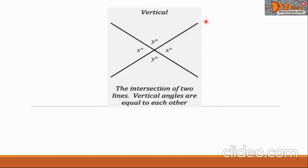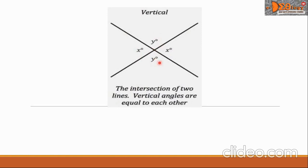Another group is vertical angles. We can see vertical angles in the intersection of two lines. In the figure, angle X is on one side and also on the other side — these two angles X and X are vertical angles. The same is true with angle Y and the other angle Y. This is another pair of vertical angles.